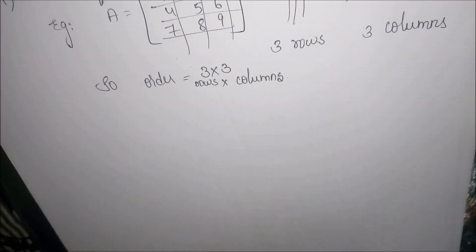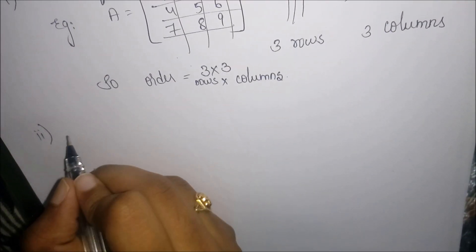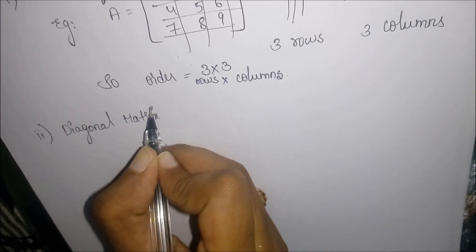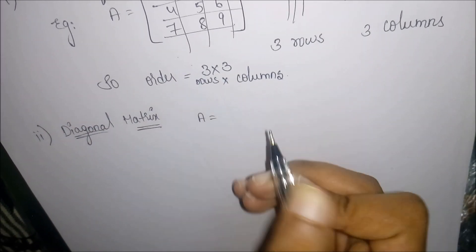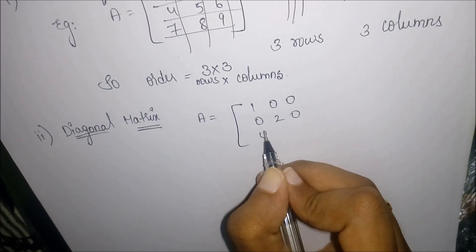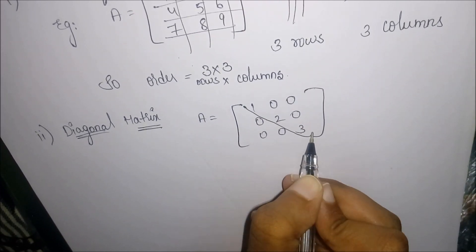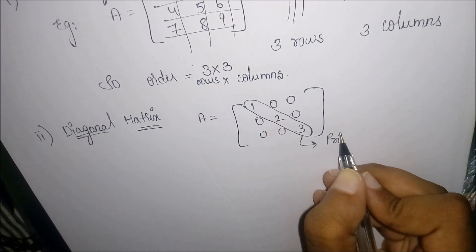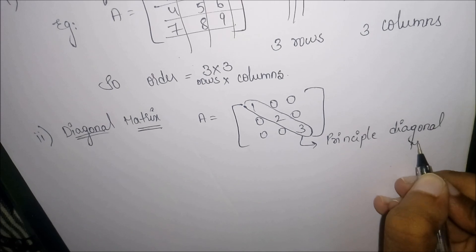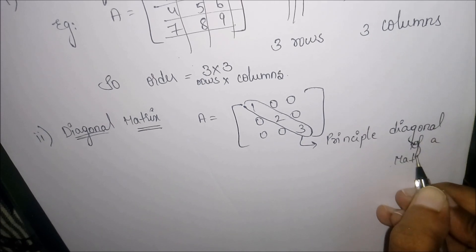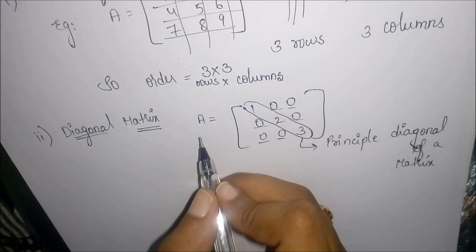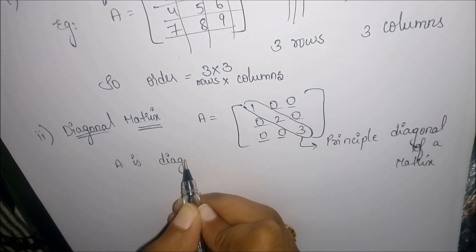The next topic is a diagonal matrix. Let us consider matrix A as given here. A diagonal matrix is a matrix where the principal diagonal elements are not zero, while all other elements of the matrix must be zero. Such a matrix is called a diagonal matrix.